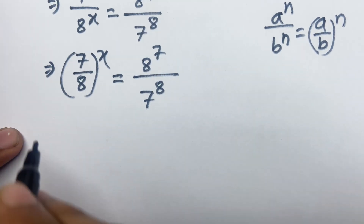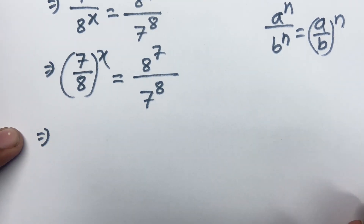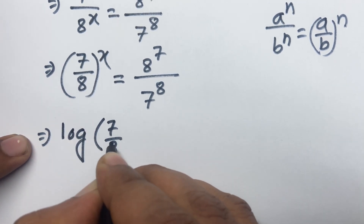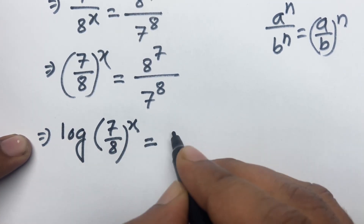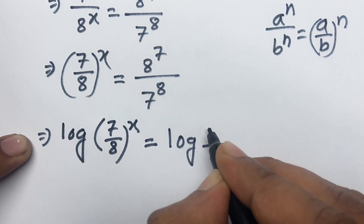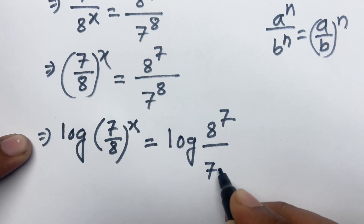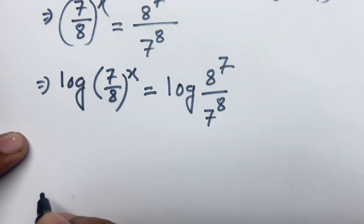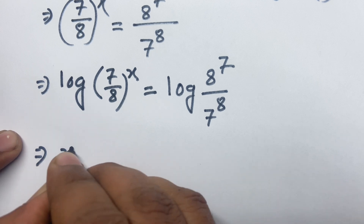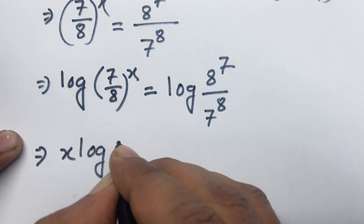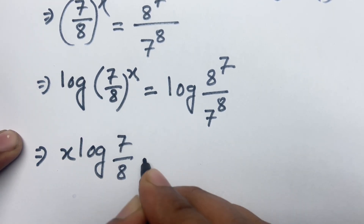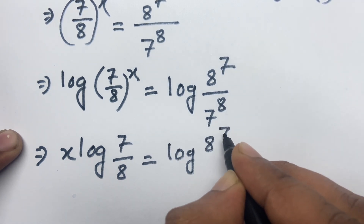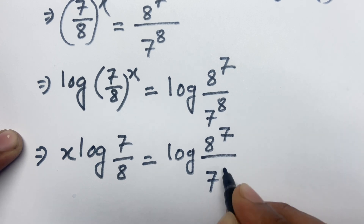Now I multiply both sides by log. I can write: log of 7 over 8, to the power x, equals log of 8 to the power 7 over 7 to the power 8. According to logarithm rules, x times log of 7 over 8 equals log of 8 to the power 7 over 7 to the power 8.